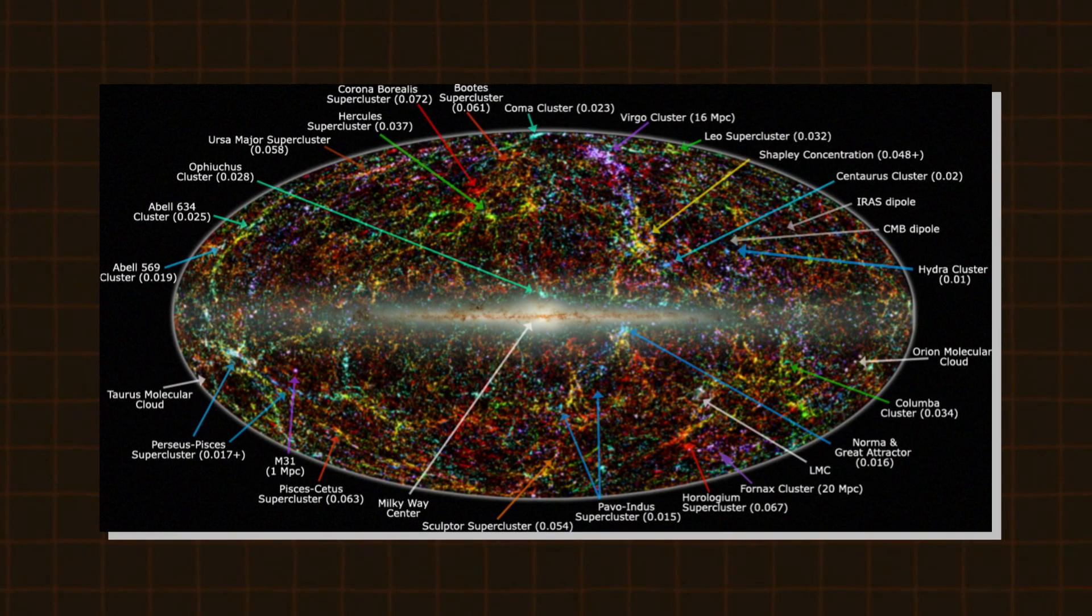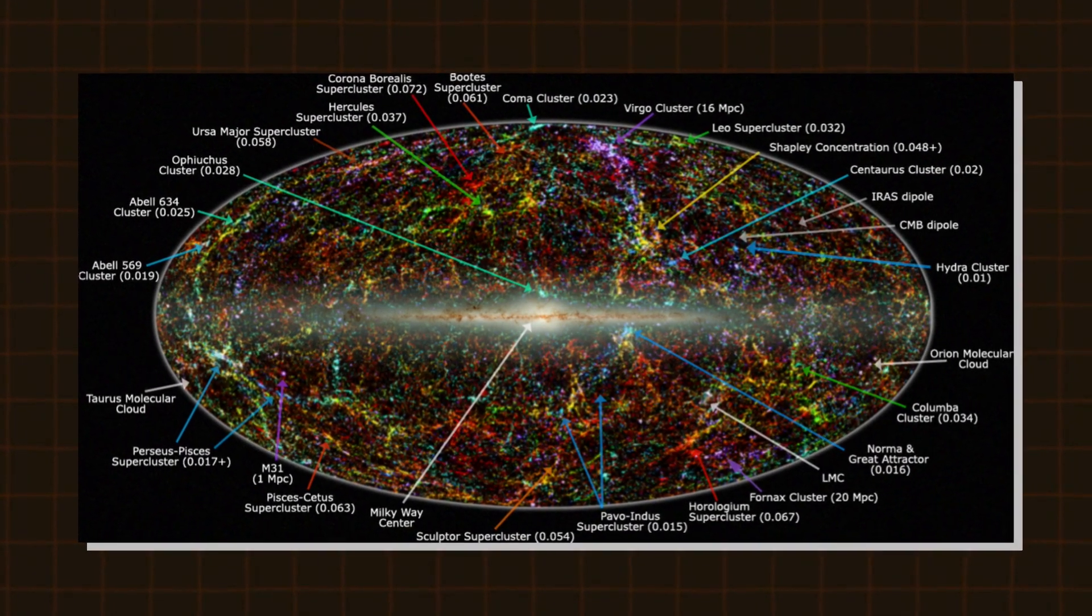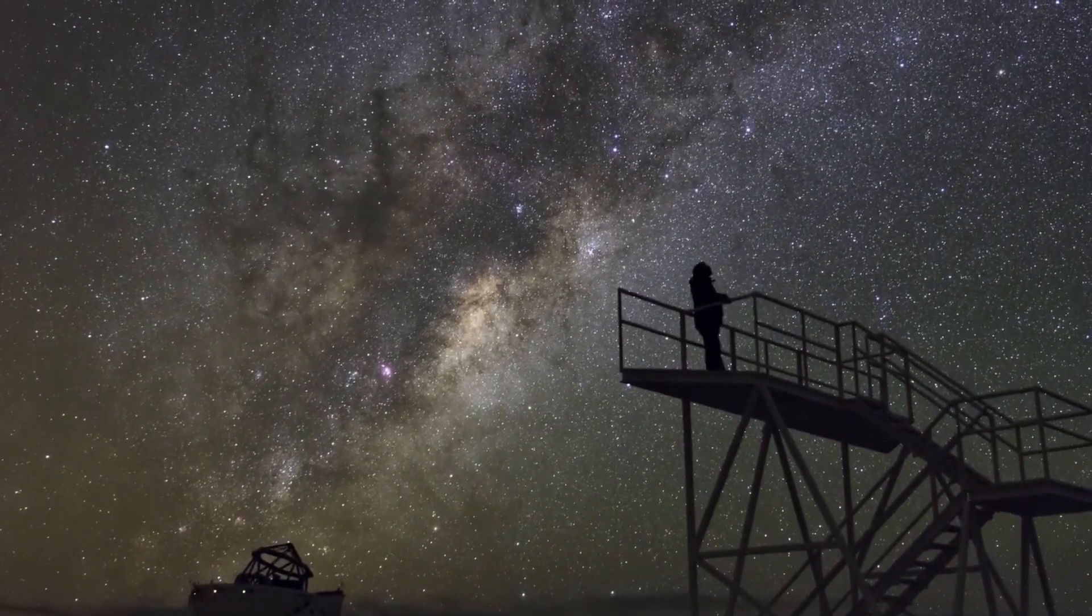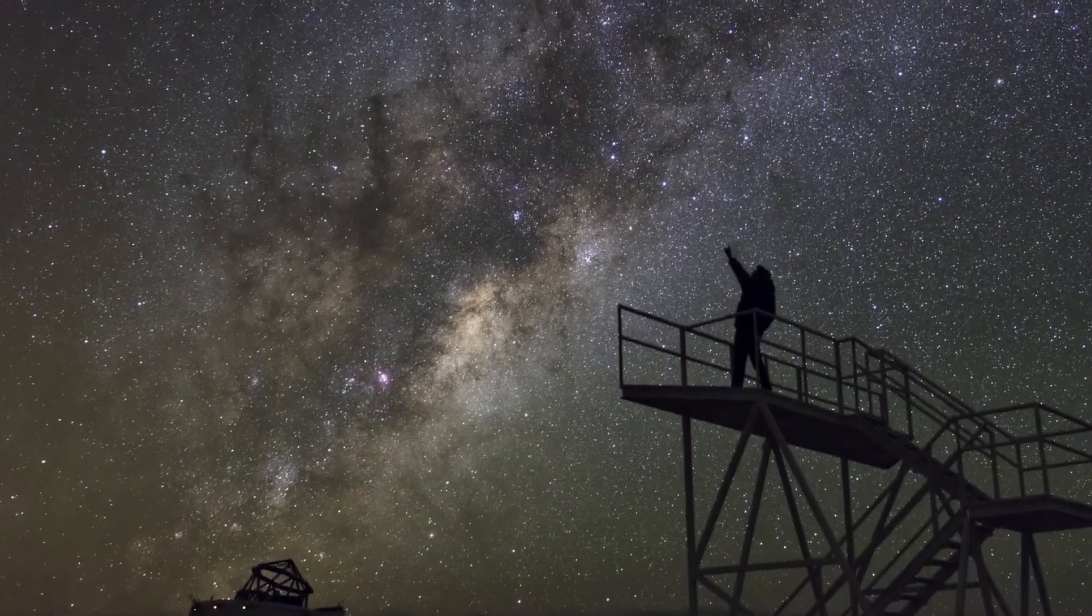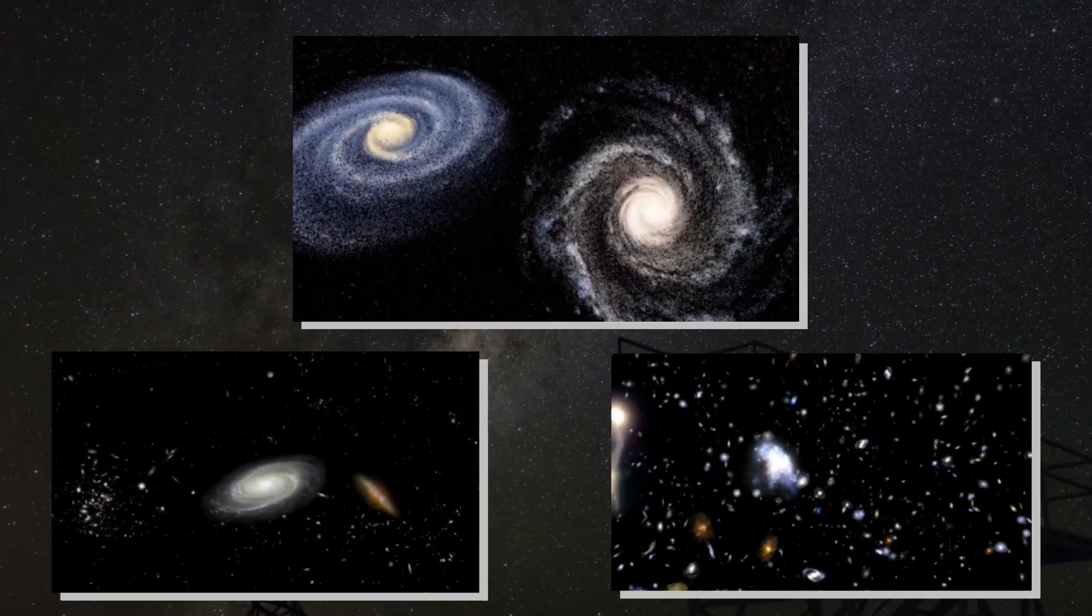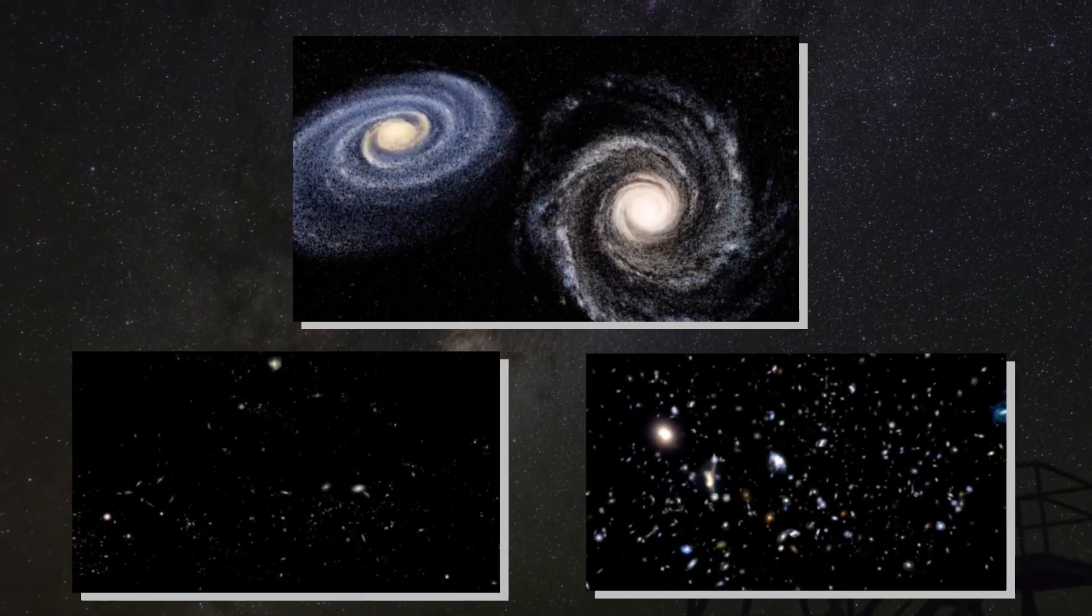The Great Attractor sits deep in the zone and is thus difficult to characterize. For several decades, humans had little to no information when it came to the structure of the universe in that direction, and thus they had no clue about the identity or contents of the Great Attractor.